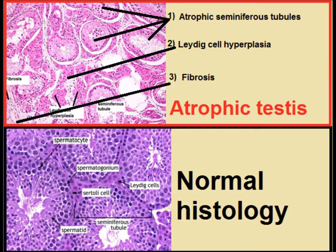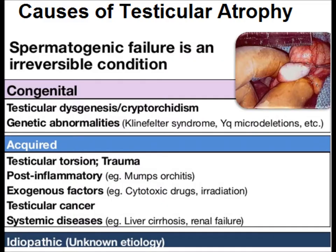Causes of testicular atrophy may be congenital or acquired. Two common congenital causes of testicular dysgenesis are cryptorchidism and genetic abnormalities. Acquired causes include testicular trauma, torsion, post-inflammatory conditions such as mumps, exogenous factors, testicular cancer, and systemic diseases.